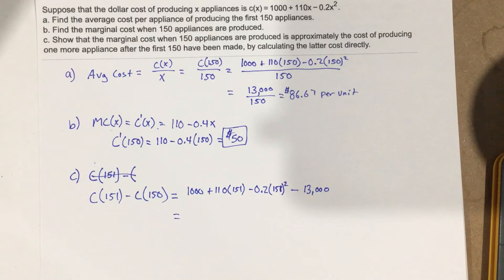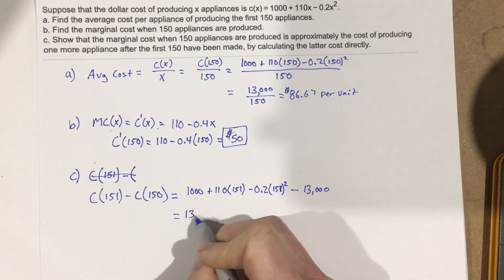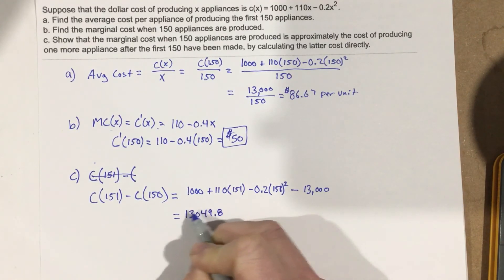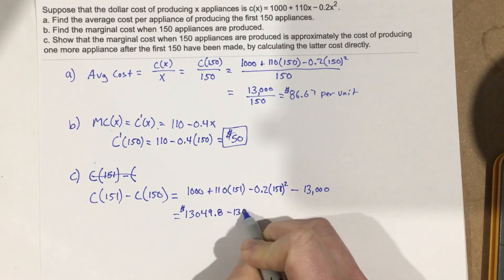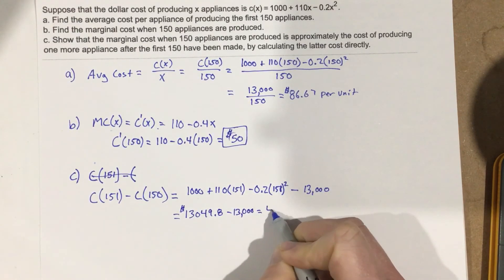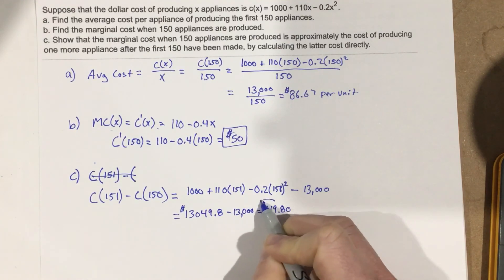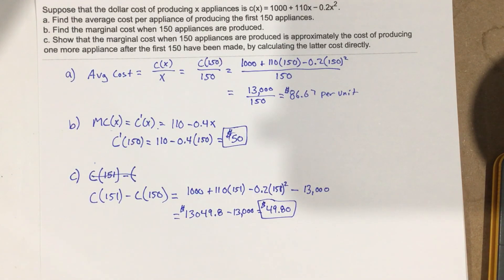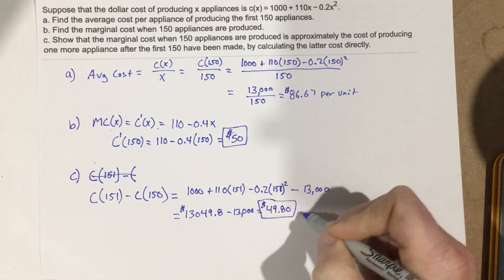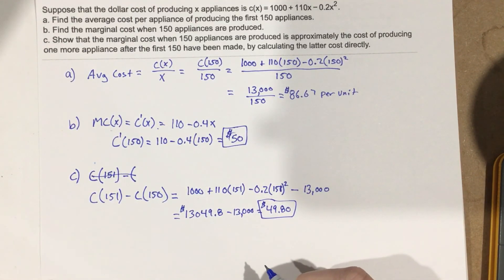Plugging this into the calculator: 1,000 plus 110 times 151 minus 0.2 times 151 squared gives 13,049.80, minus 13,000. That gives us $49.80. So this is the cost for the 151st unit. You can see that $49.80 and $50 are very close, so the marginal cost does approximate the cost for the additional unit.